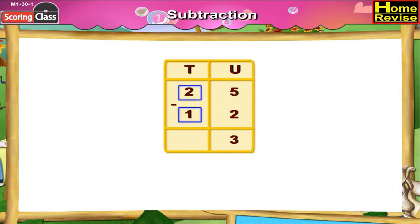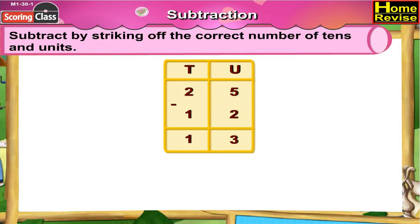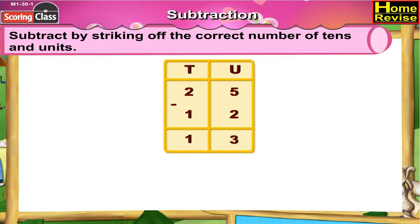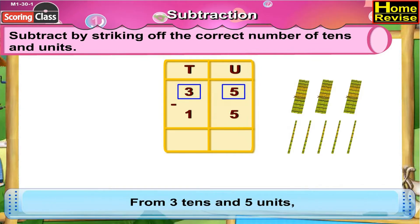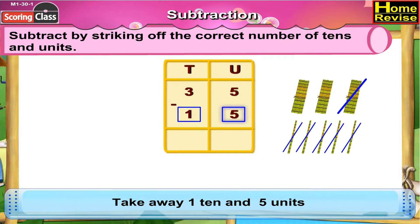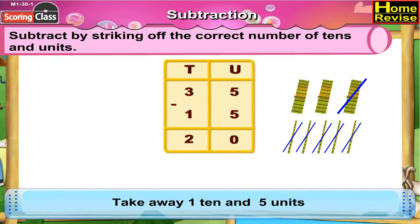From 2 tens, if you take 1 ten away, you have 1 ten left. So 25 minus 12 is equal to 13. Now, subtract by striking off the correct number of tens and units. Next is 35 minus 15. That is, from 3 tens and 5 units you have to take away 1 ten and 5 units. If you take 5 units away from 5 units you will be left with 0. If you take away 1 ten from 3 tens then you have 2 tens. So 35 minus 15 is 20.